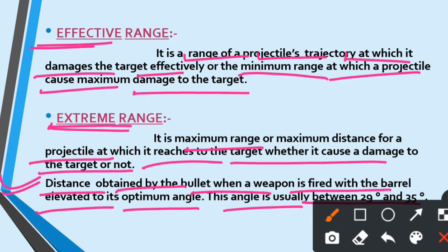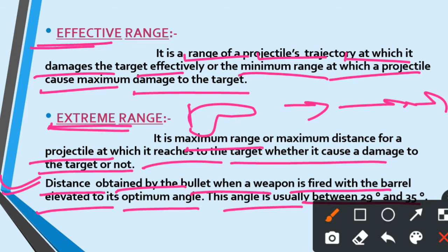This angle is usually between 29 degrees to 35 degrees. तो यहां पर क्या होता है — वो distance, वो range जब किसी bullet के द्वारा obtain करी जाती है जब आप firing करते हैं, तो उसमें क्या रहता है — आपकी barrel को थोड़ा सा elevate करना पड़ता है. If you have a bullet trajectory in the curve direction, then the bullet will travel this way.